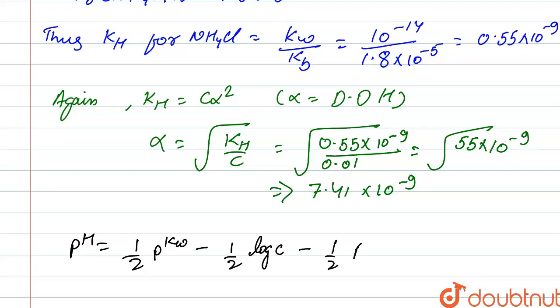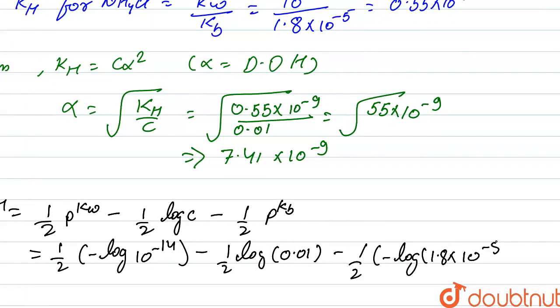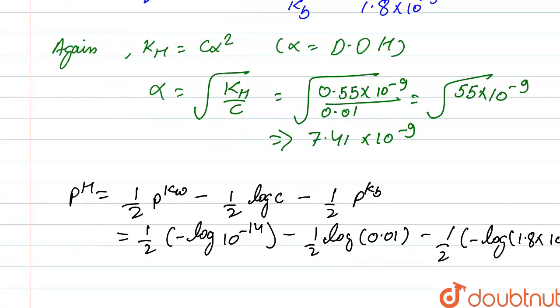We can also write like this: half of minus log Kw, that is 10 to the power minus 14, minus half of log C, that is 0.01, minus half of pKb. Log C is minus 2, and pKb is minus log of 1.8 into 10 to the power minus 5. So it becomes half of...